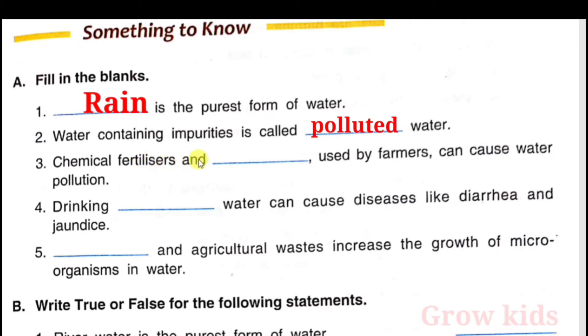Question 3: Chemical fertilizers and pesticides used by farmers can cause water pollution.